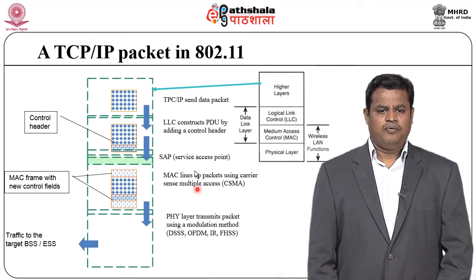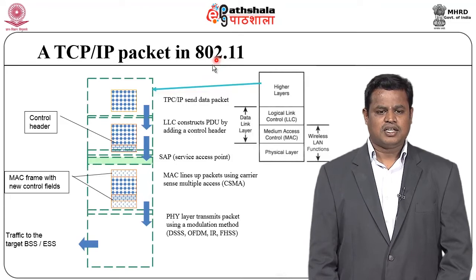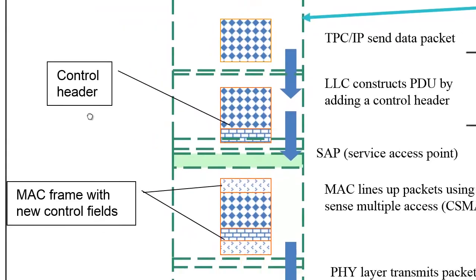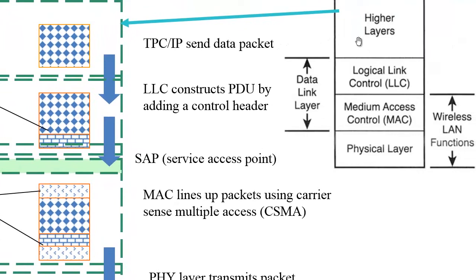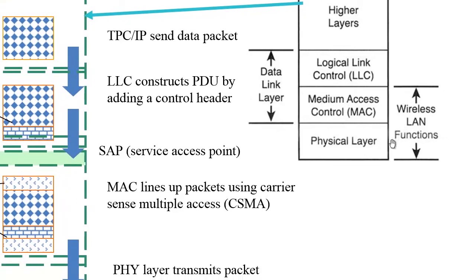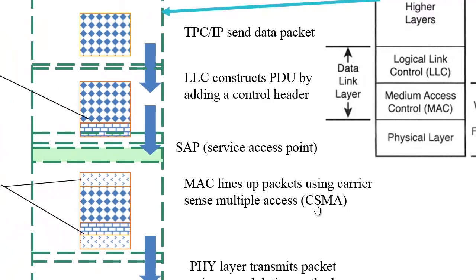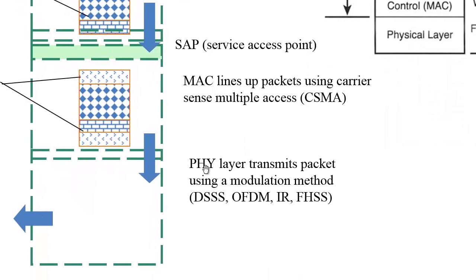Overall, we know very well about packets with respect to 802.11 in the case of wireless LAN. Here we have a control header MAC frame with control field and traffic to a target either BSS or ESS. Higher layers include IP at the network layer, and WLAN functions at the MAC and physical layer. Special care is taken at the logical link MAC layer, along with modulation methods like DSSS, OFDM, IR, and FHSS for transmission of data in the wireless media.